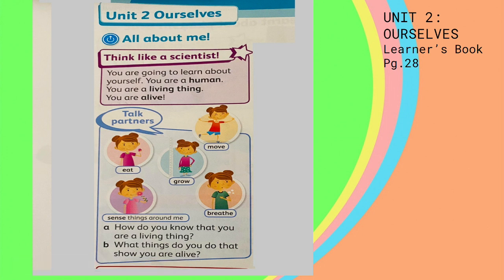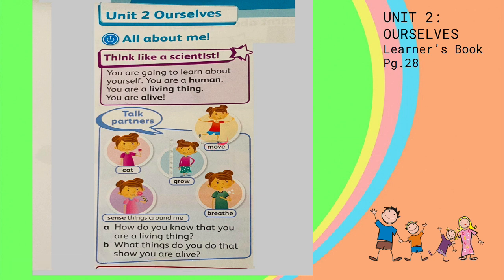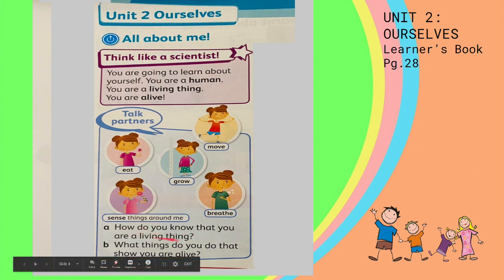Look at these pictures of activities. Talk to your partner — ask: Do you eat? Can you move? Do you grow? Can you breathe? Or can you sense things around you? Ask your partners: how do you know that you are a living thing? And what things do you do that show you are alive?